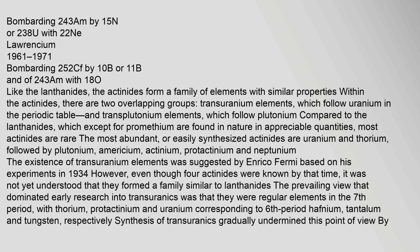Like the lanthanides, the actinides form a family of elements with similar properties. Within the actinides there are two overlapping groups: transuranium elements, which follow uranium in the periodic table, and transplutonium elements, which follow plutonium. Compared to the lanthanides, which except for promethium are found in nature in appreciable quantities, most actinides are rare. The most abundant or easily synthesized actinides are uranium and thorium.